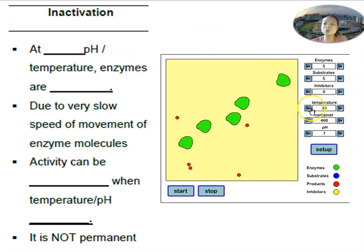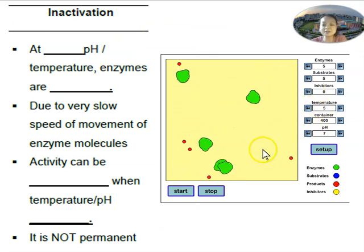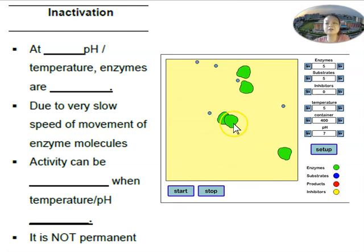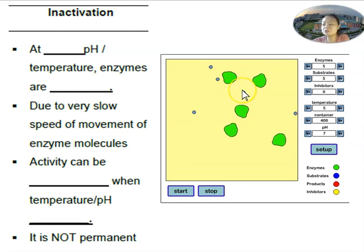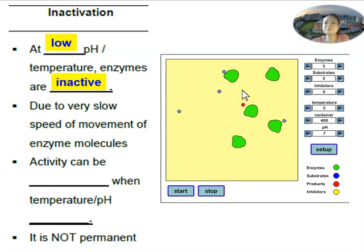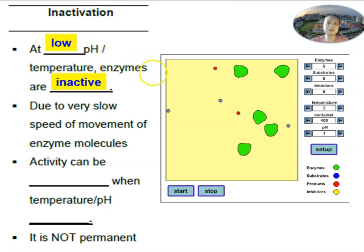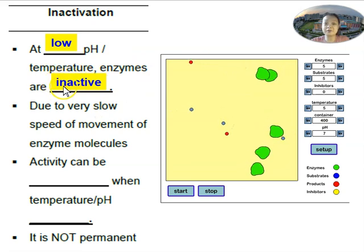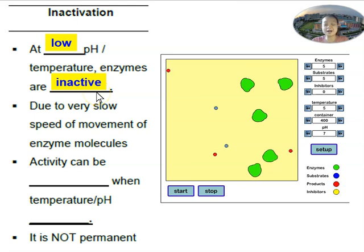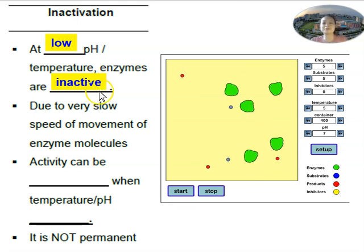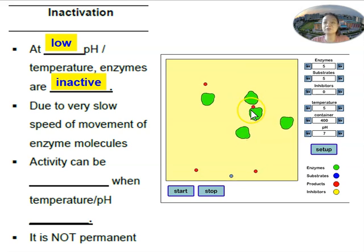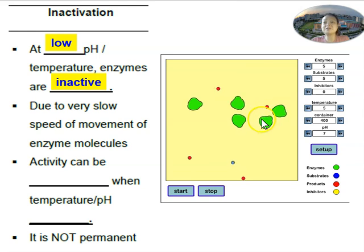Now let's look at what happens when temperature becomes 5 degrees Celsius. Look at the movement of the enzyme and the substrate — they are so slow. Because we say that at low temperature, your enzymes are inactive. The word inactive means not active. When somebody is very active, they're moving fast, running from one place to another. But the enzyme here is not active at all. It is still carrying out a reaction — you can see products are being formed — but it is very slow.